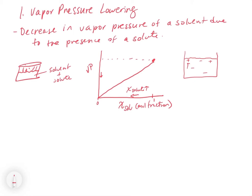This graph is really important. The linear relationship shown is the theoretical one, and that's what we're going to work with in this video. In reality, we sometimes get a curved trend — that's called a real solution, which has to do with interactions between the solute and solvent. We are going to work with the theoretical, which gives a linear relationship between the vapor pressure and the concentration of the solute.